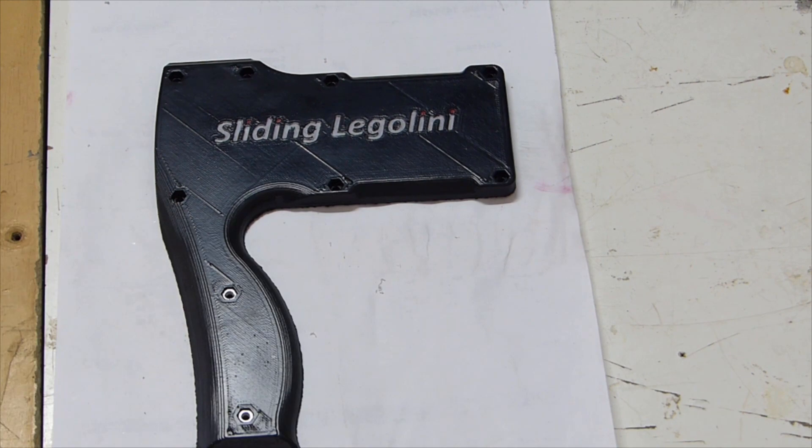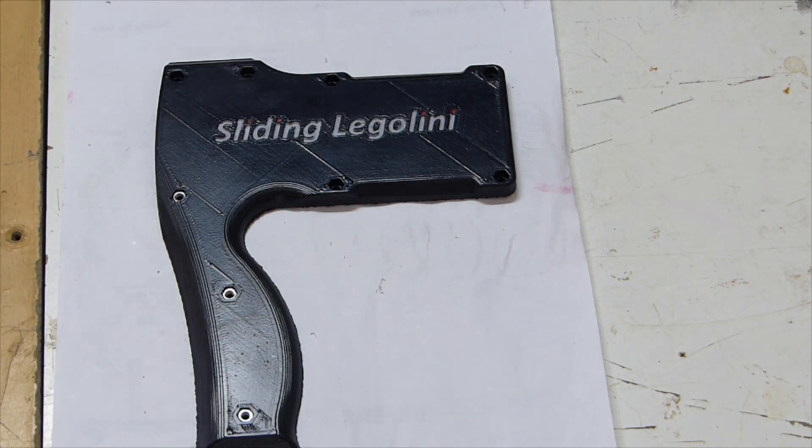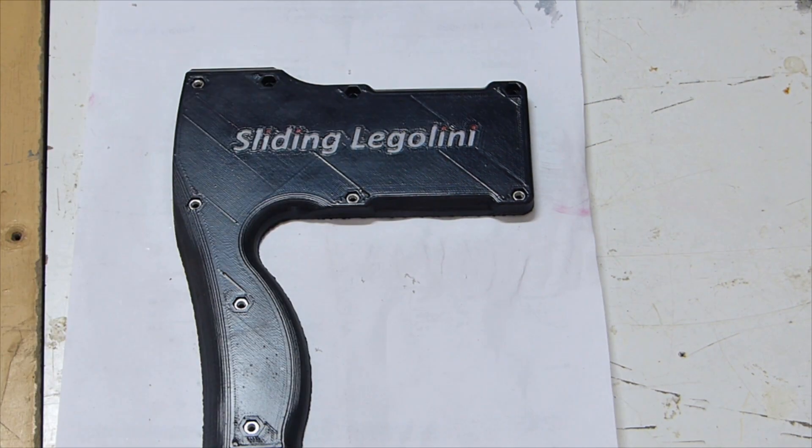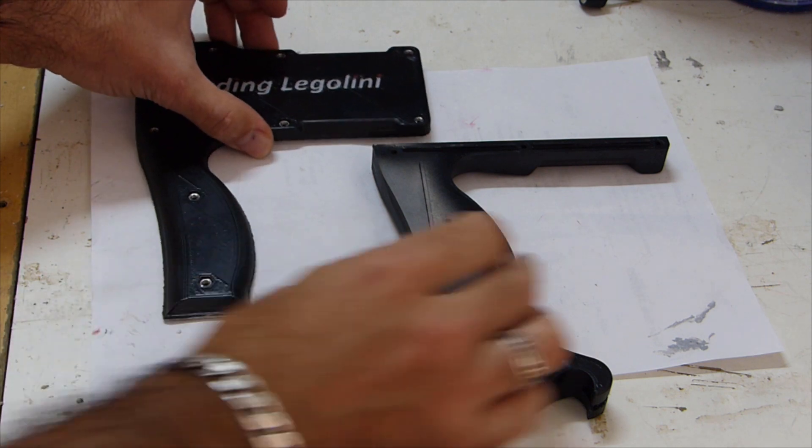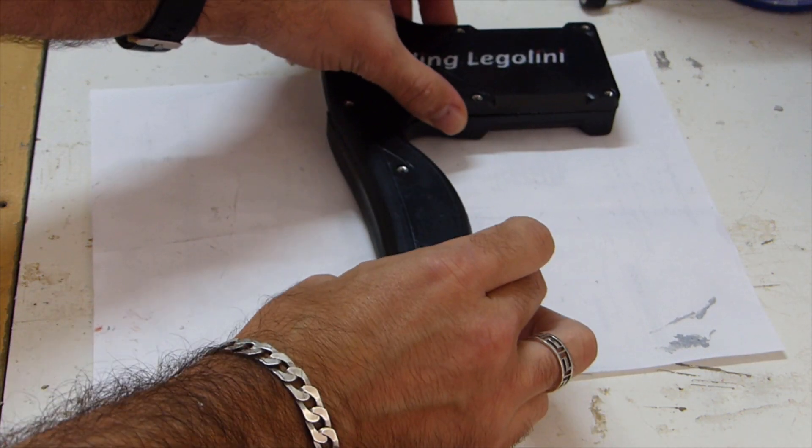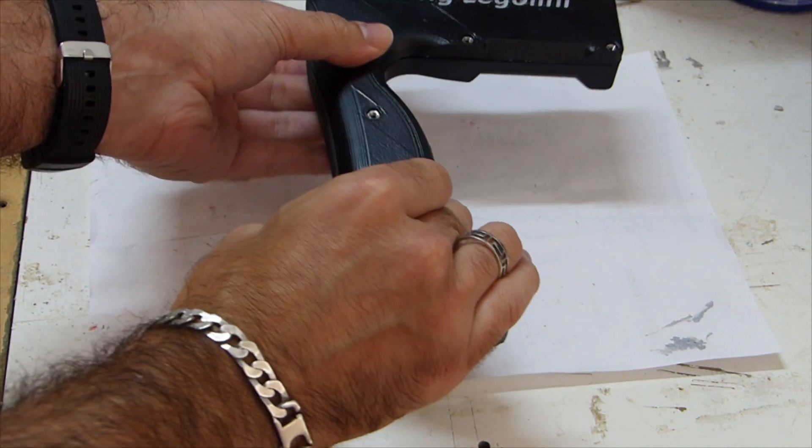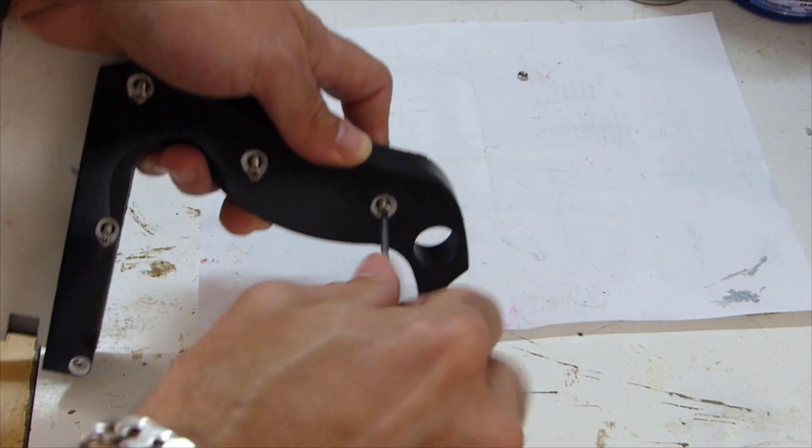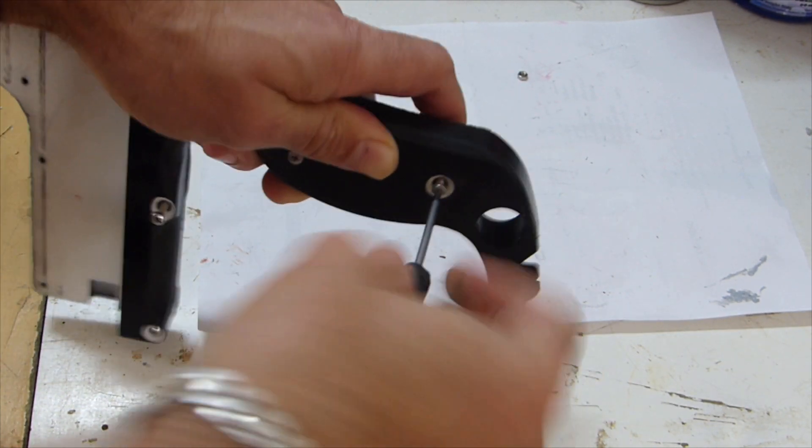Next, I inserted some M3 nuts with the help of an M3 bolt to push them in. Nine M3 nuts are needed for this part. I then placed the two corresponding parts on top of each other and make sure they fit correctly in the grooves. And then inserted M3 by 20mm bolts from the other end to secure them together.